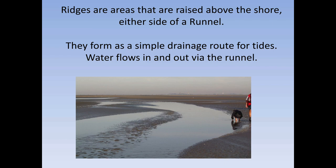Ridges and runnels - people find these really complicated and you don't need to. Ridges and runnels are generally found on sandy beaches and you may have seen them before. If you're walking across a sandy beach there are often puddles in the sand. The ridge is the bit that's slightly higher and the runnel is where you can see the water - they are simply drainage channels. As the tide goes out the water is trying to drain back to the sea because of gravity, and these runnels are the ways that the tide comes in and out. That's it.